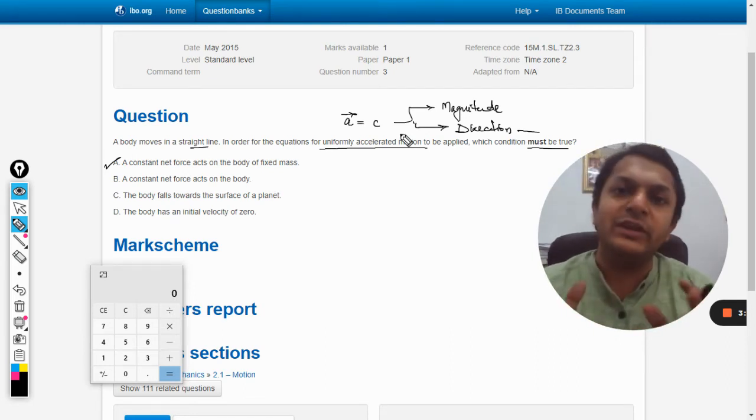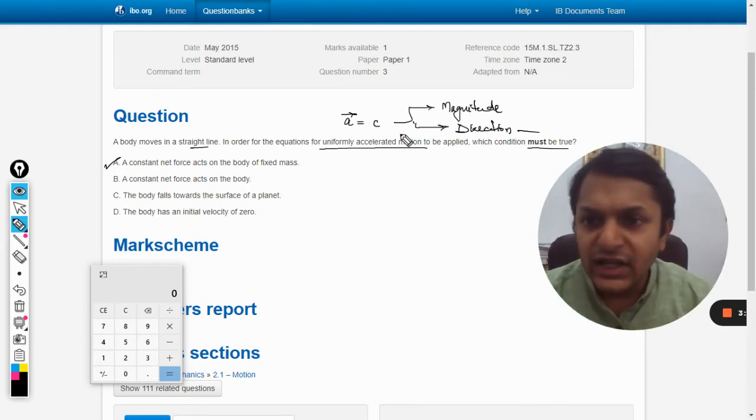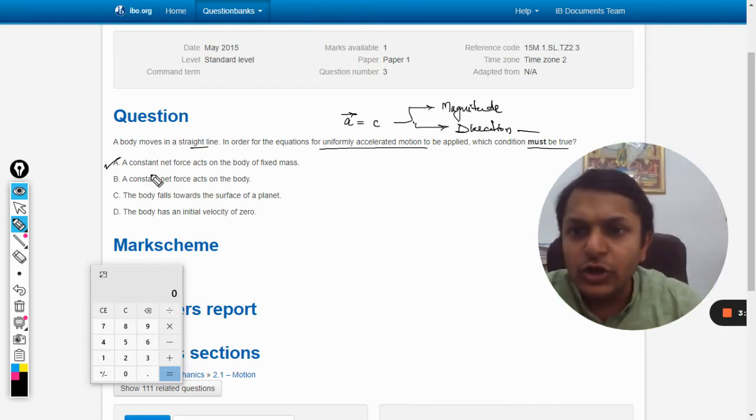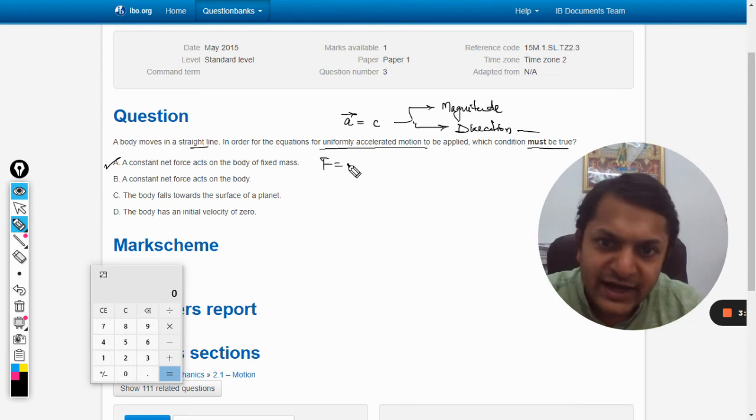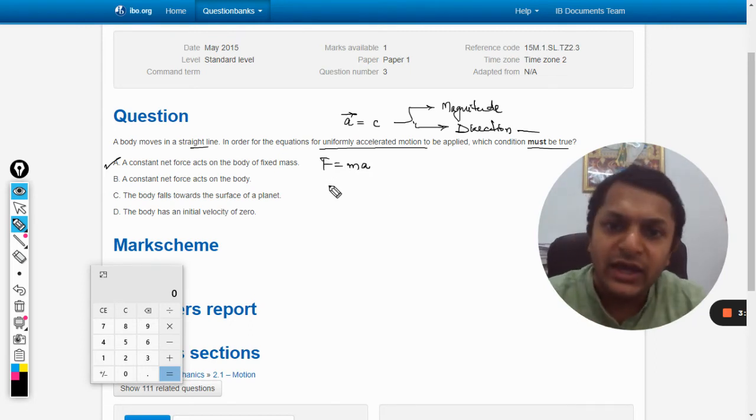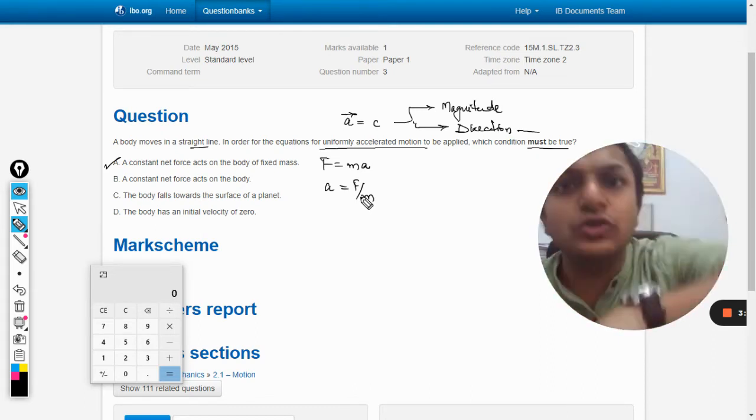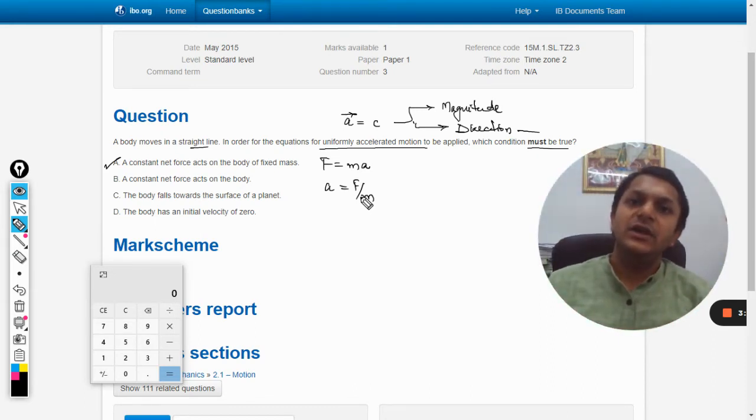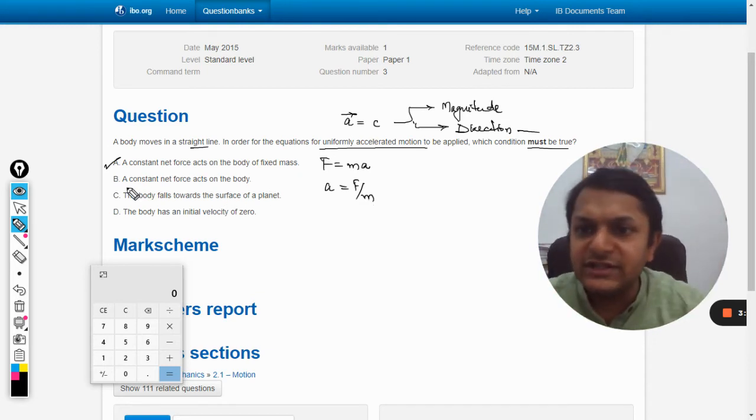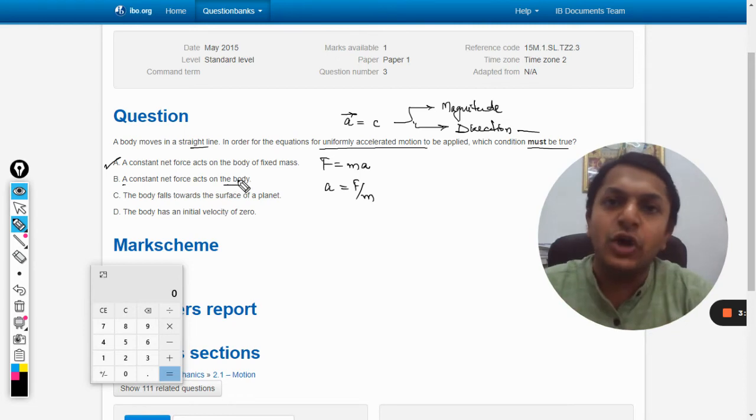So acceleration has to be constant. A constant net force is acting, so F is equal to m into a, which means a is equal to F by m. So it means force should be constant and mass should also be constant. Be very particular about it because of the second option - it says constant net force acts on a body and it is not saying anything about the mass.